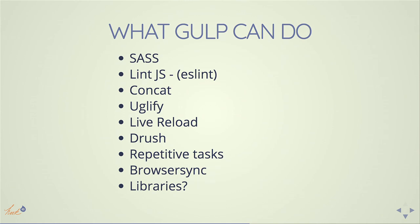What can Gulp do? Sass compilation, LintJS, ESLint — which cleans up your code. Concatenation, Uglify — which makes files really small. Live reload, which reloads your browser automatically when you change CSS — that's such a time saver. It can run Drush tasks and clear the Drupal cache for you. Drupal and Gulp all work together. It does any repetitive tasks — browser sync, loading libraries. If you don't want to load a library through Drupal 8 for some reason, Gulp can do it. Gulp does all kinds of things.